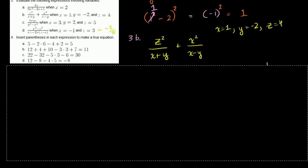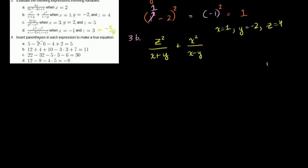Problem 4: Insert parentheses in each expression to make it a true equation. For 4b: 12 divided by 4 plus 10 minus 3 times 3 plus 7 equals 11.